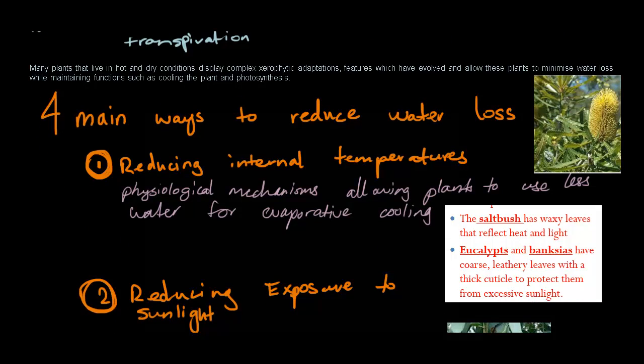So let's start off. The saltbush has waxy leaves that reflect heat and light, and the eucalypts and banksias have coarse leathery leaves with a thick cuticle to protect them from excessive sunlight. So over here, you can actually just see a little picture to kind of emulate what I'm trying to say. That stuff is to allow for the excessive sunlight to actually not penetrate through. And these internal temperatures can be reduced.